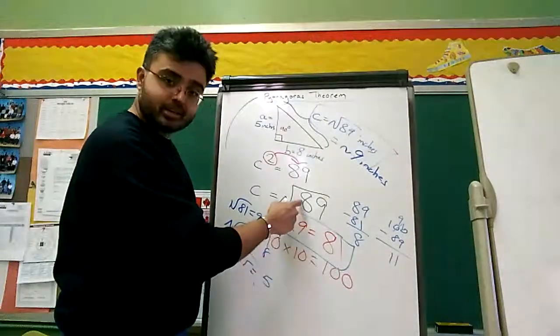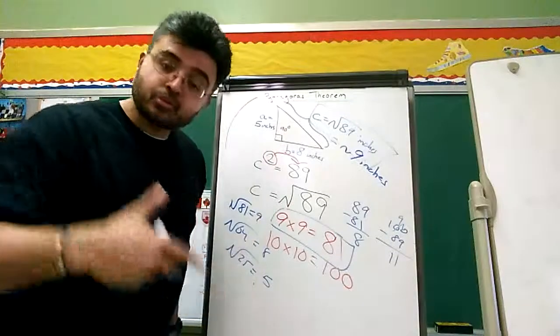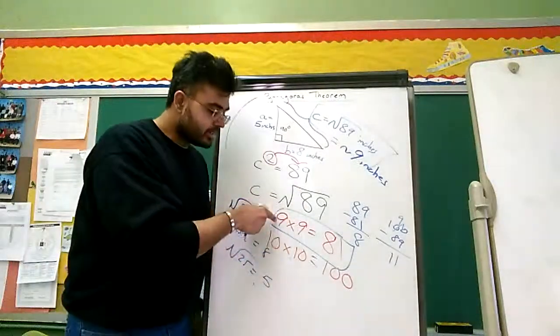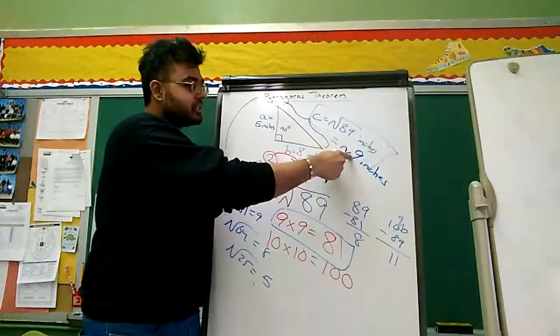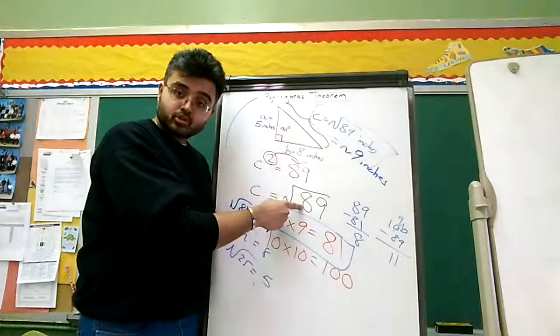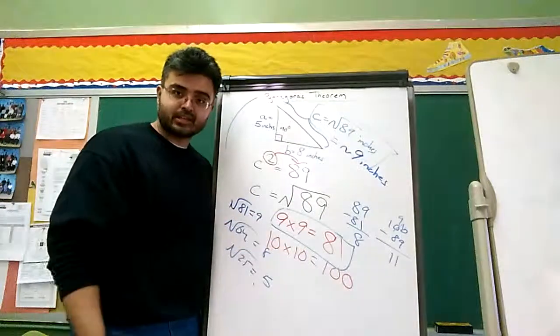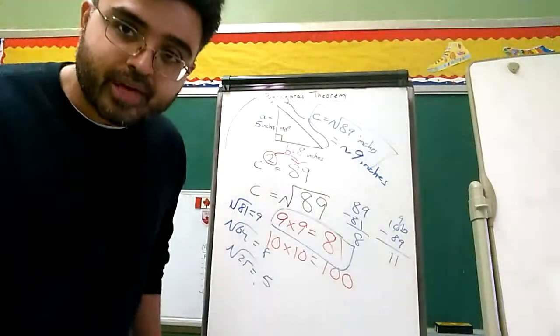But when you have a situation like this, then you have to round it to the nearest closest number. And in this case, 9 is the closest number to get 89. 9 times 9 is 81. That's the closest we can get to 89. And this is how you do a Pythagoras theorem.